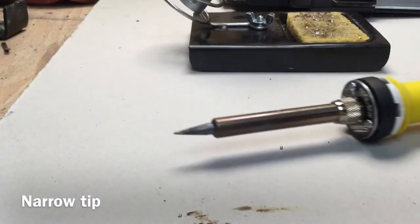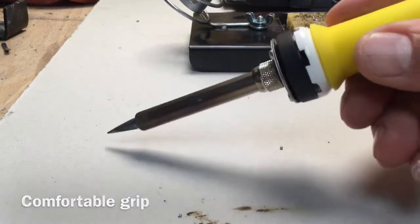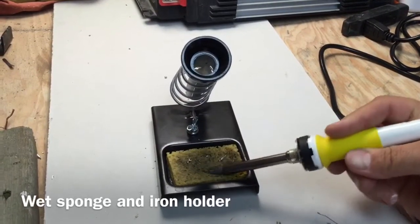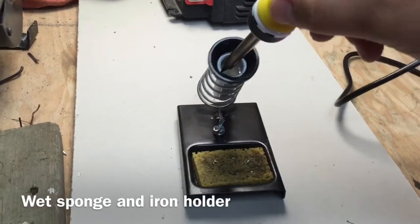A narrow tip, comfortable grip, are all helpful when choosing a soldering iron. An iron holder, as well as a wet sponge for cleaning, are also helpful when soldering electronic components.